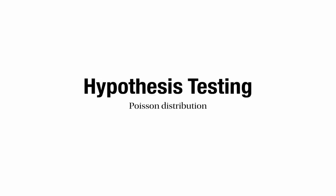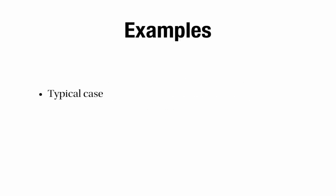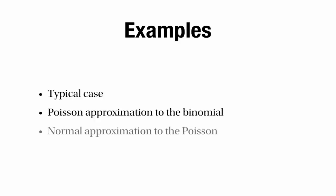This is a video about hypothesis testing, and in particular hypothesis tests where the test statistic has a Poisson distribution. I'm going to look at three examples. The first will be a typical case where the test statistic has a Poisson distribution. The second will be a case where the test statistic actually has a binomial distribution, but we'll want to approximate that with a Poisson distribution — a Poisson approximation to the binomial. The third example will be a case where the test statistic has the Poisson distribution but we'll use the normal approximation to calculate the relevant probability.